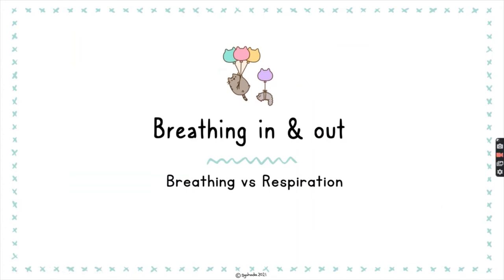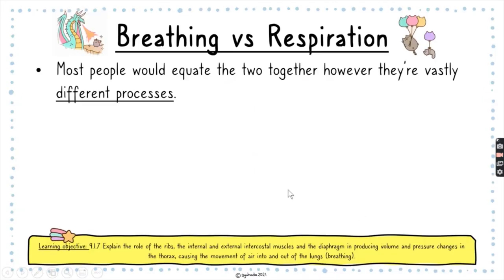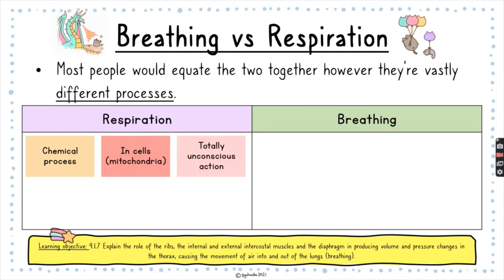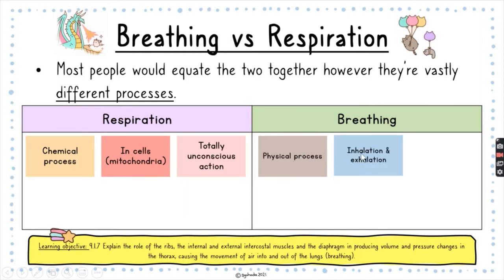Let's define breathing in and breathing out, and how breathing differs from respiration. Most people equate the two, but they are actually different processes. Respiration is a chemical process — the breakdown of food to release energy — and occurs only in the cells, specifically the mitochondria. It is totally unconscious and cannot be controlled. Breathing, on the other hand, is a physical process that includes inhalation and exhalation.